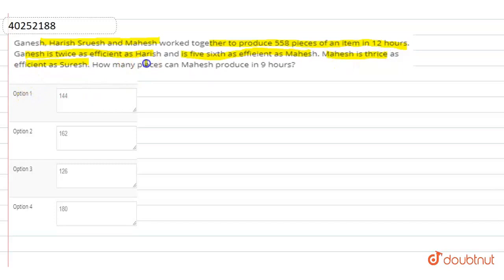How many pieces can Mahesh produce in 9 hours? This is our question. All of Ganesh, Harish, Suresh, and Mahesh together produce 558 pieces in 12 hours.